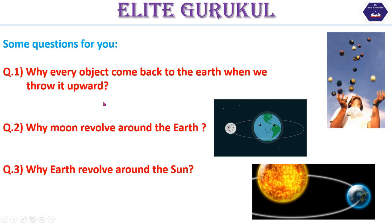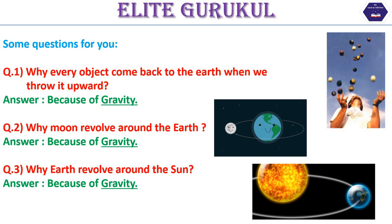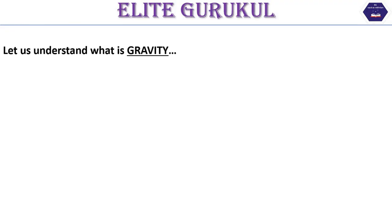The first answer is: because of gravity. हर एक object जो ऊपर जाता है, वो नीचे gravity की वजह से आता है। Second question — हमारा moon क्यों revolve करता है earth के round — उसका reason भी है because of gravity. And तो आप सोच सकते हो third answer क्या होगा — third answer भी gravity है। हमारा earth sun के round because of gravity revolve करता है। तो इन तीनों questions का answer है gravity। Gravity एक बहुत basic concept है और बहुत ही beautiful phenomena है। हमारा universe gravity की वजह से ही existence में है। So let's understand what is gravity.